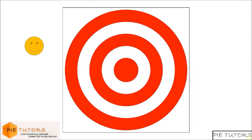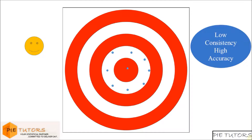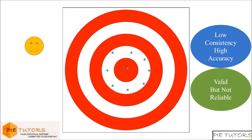The second person fires all his bullets and it is observed that all his bullets hit uniformly around the center. We can see that the firing consistency for this person is low, but on an average, the firing accuracy is high. This scenario is analogous to a valid but unreliable measure.